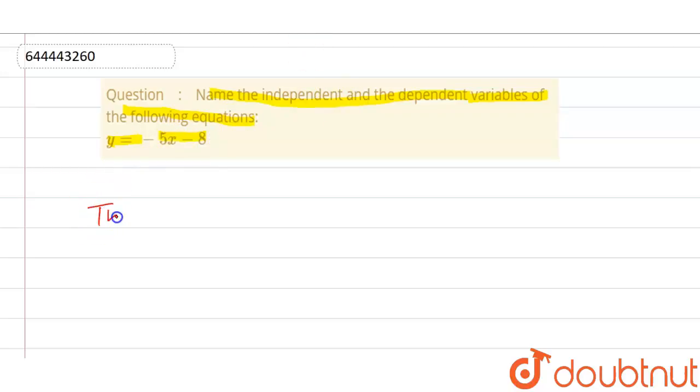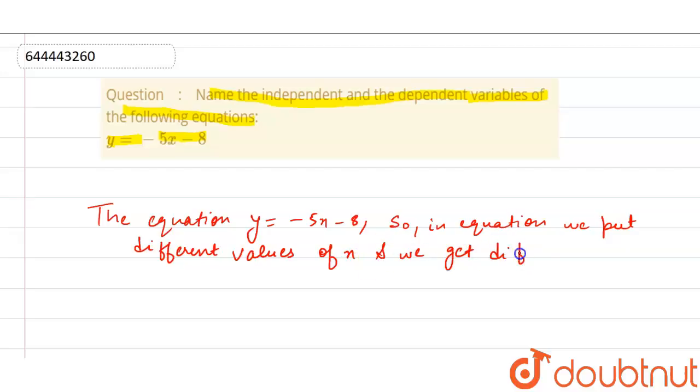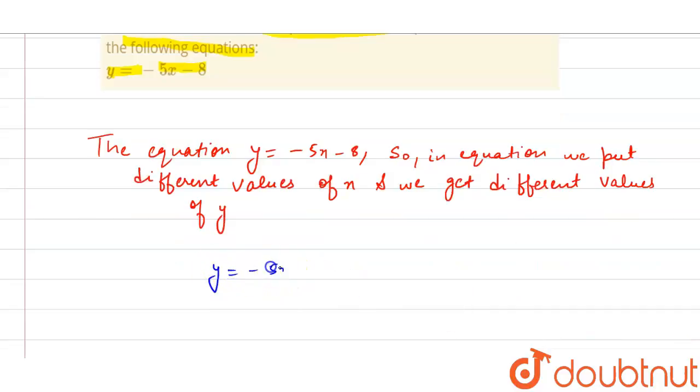The equation given to us is y = -5x - 8. In this equation, we put different values of x and we get different values of y. For example, our equation is y = -5x - 8.